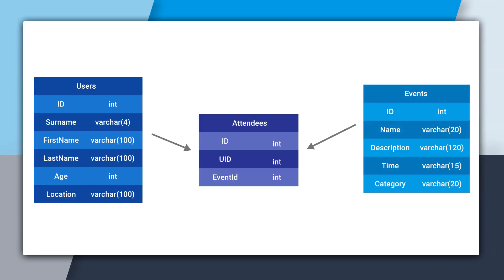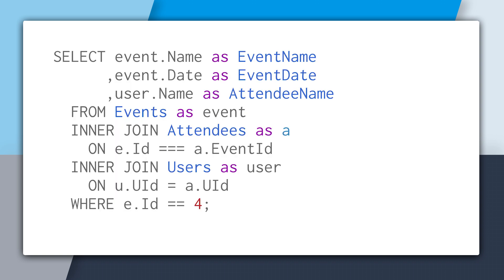This is a database of events. We have events, users, and attendees. An attendee is obviously a user that goes to an event. And if we want to get back all of the attendees' data, we would have to write this SQL query right here. We have two inner join statements — we are inner joining events with attendees, and attendees with users.